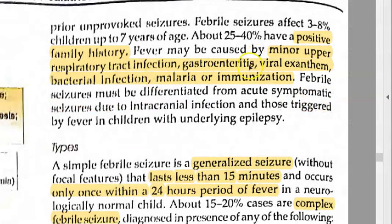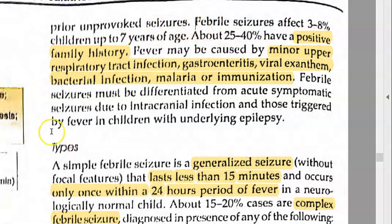These children can have a minor upper respiratory tract infection, diarrhea, a viral or bacterial infection, malaria, or they could have just taken a vaccine. After this, they would develop a fever, and because of a high grade fever they will get a seizure. This is febrile seizure. Most of these children, the cause could be that they have a positive family history.